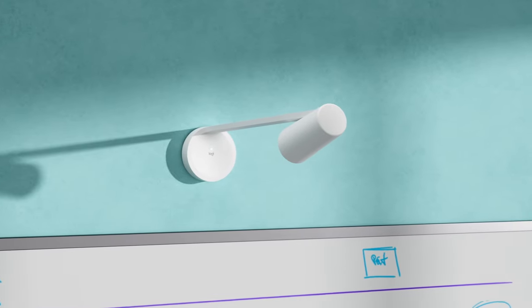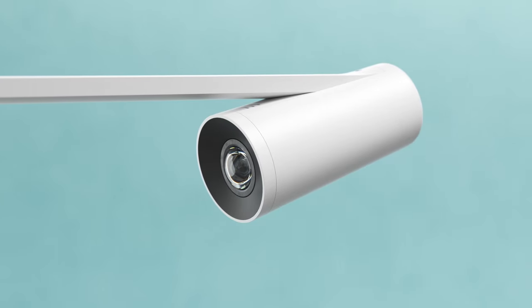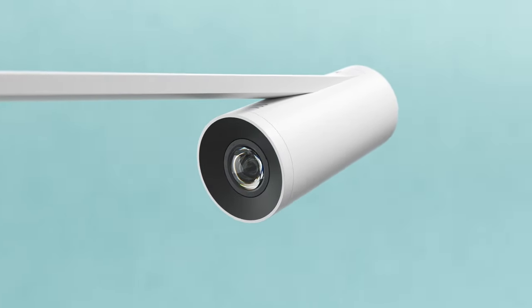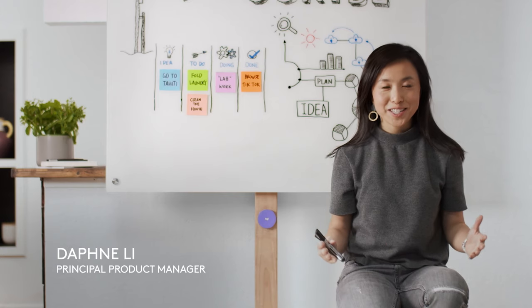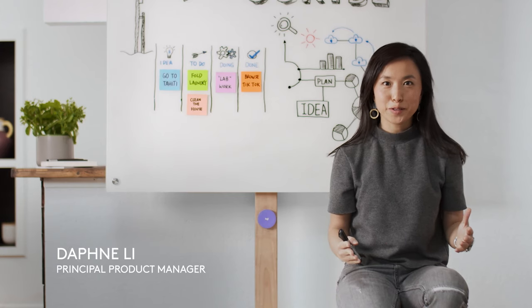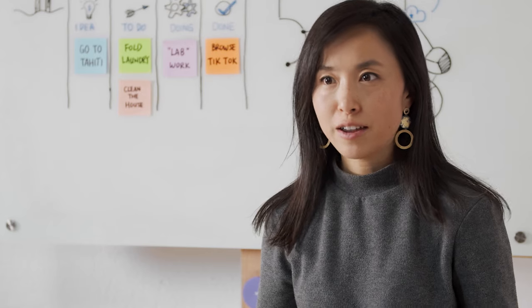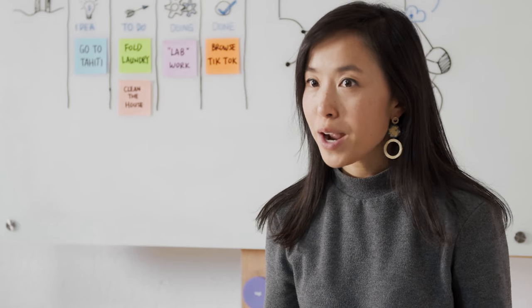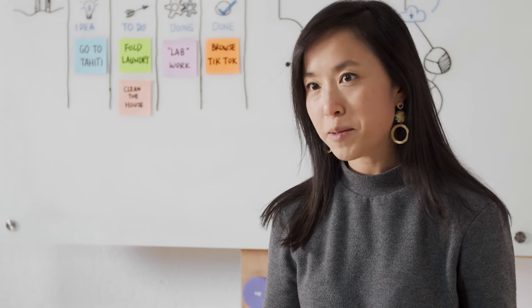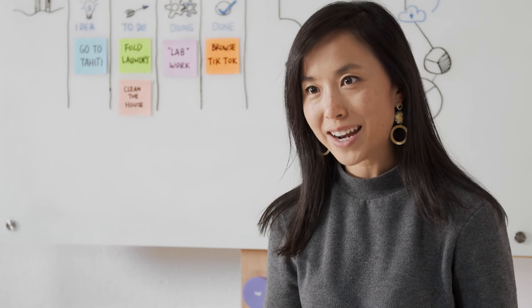Meet Logitech Scribe, an AI-powered camera that brings a whiteboard into video meetings with incredible clarity. When designing Scribe, we wanted to create a solution where you can use the whiteboards and markers you already have. There's no learning curve. Just press the purple share button or tap the meeting room controller and start writing.